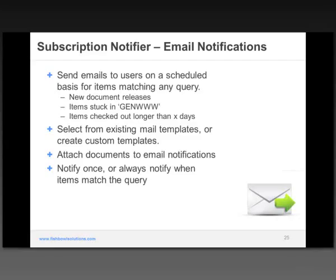If you're working with a vendor on a contract negotiation and they need to see the actual contract, these users are outside your firewall — you can attach that content to an email so they have more context of what they need to respond to, and then work with you on that contract. Subscription Notifier also has the ability to notify just once, or always notify when items match the query. Based on configuration, you could have just one email notification, or for any content matching the criteria, you could always be notified.